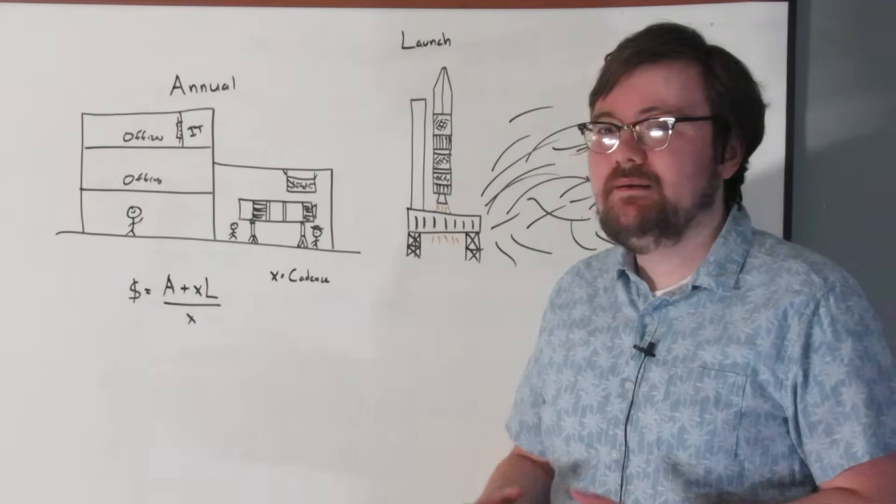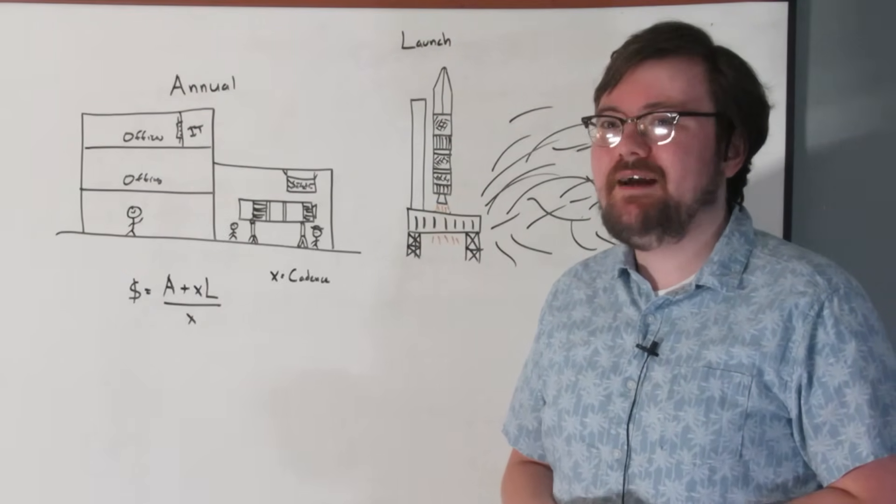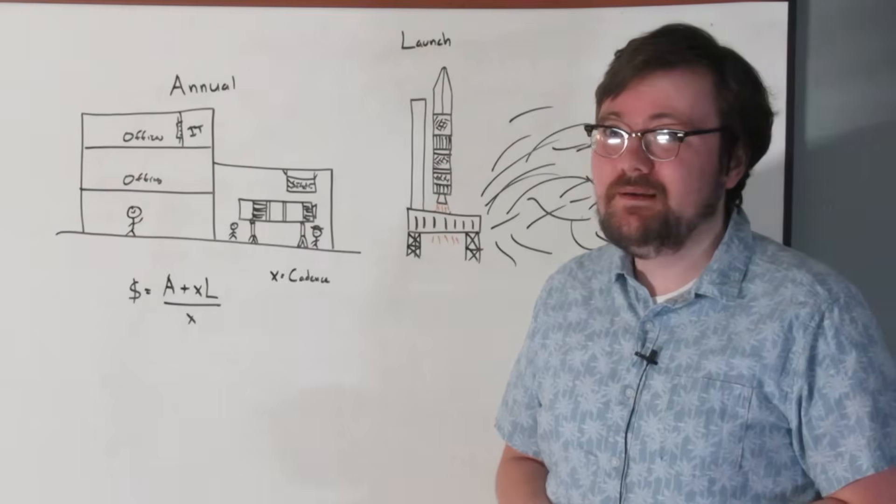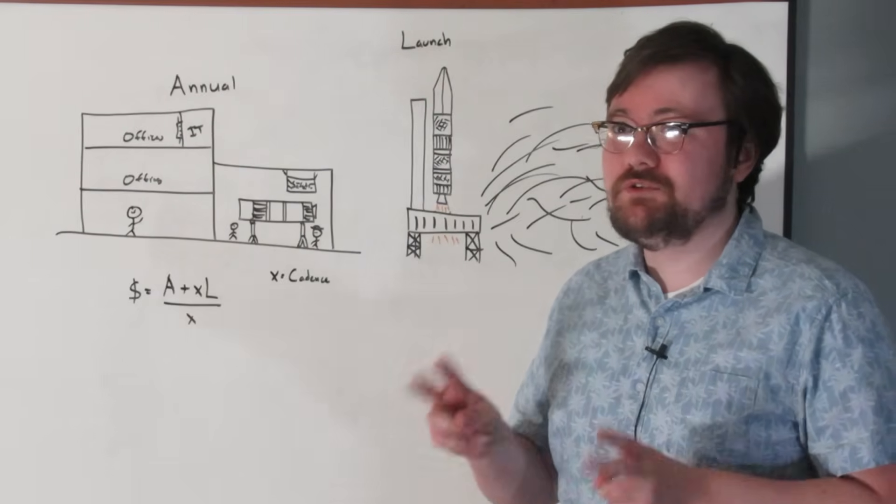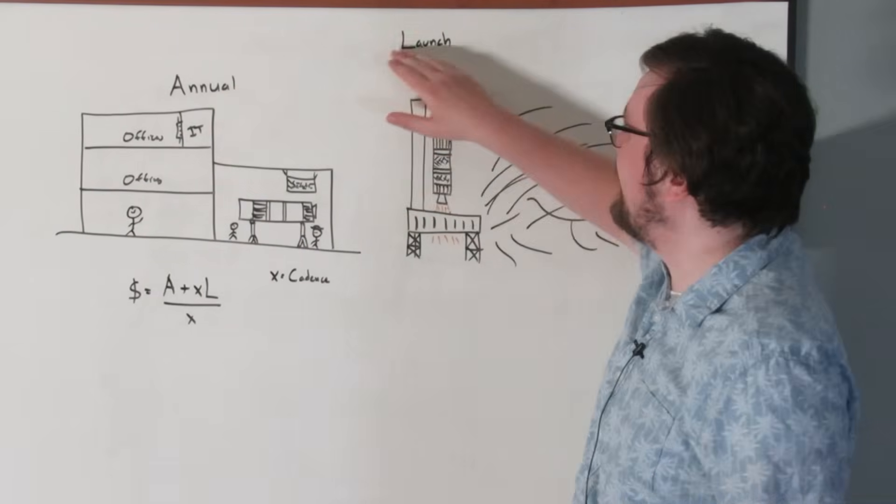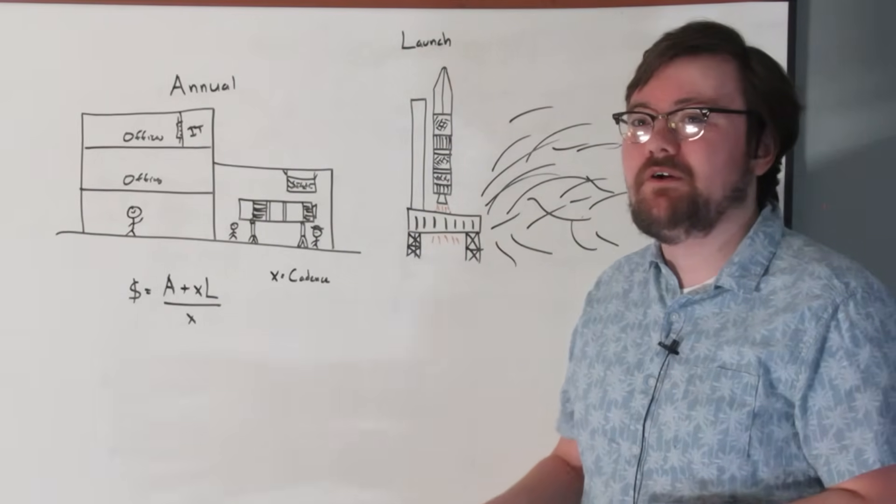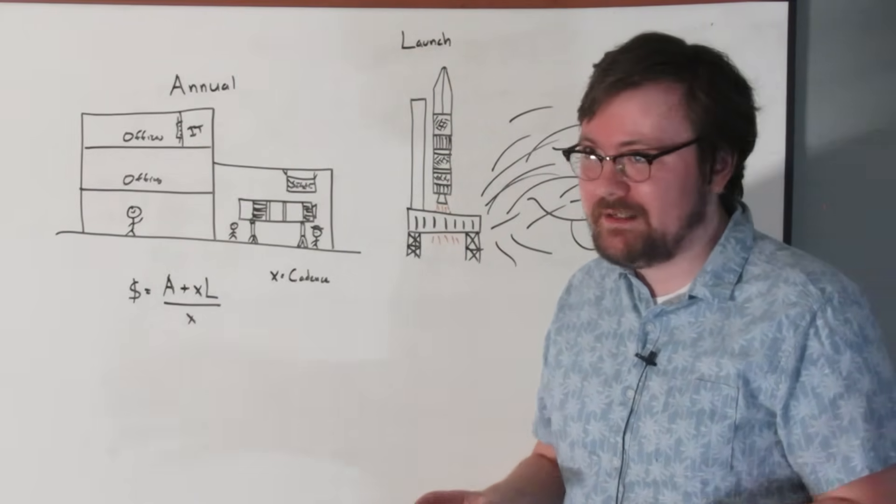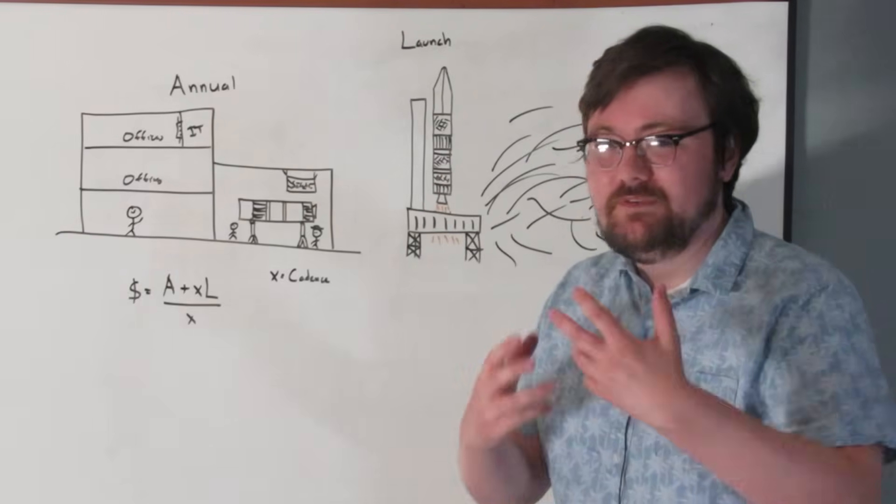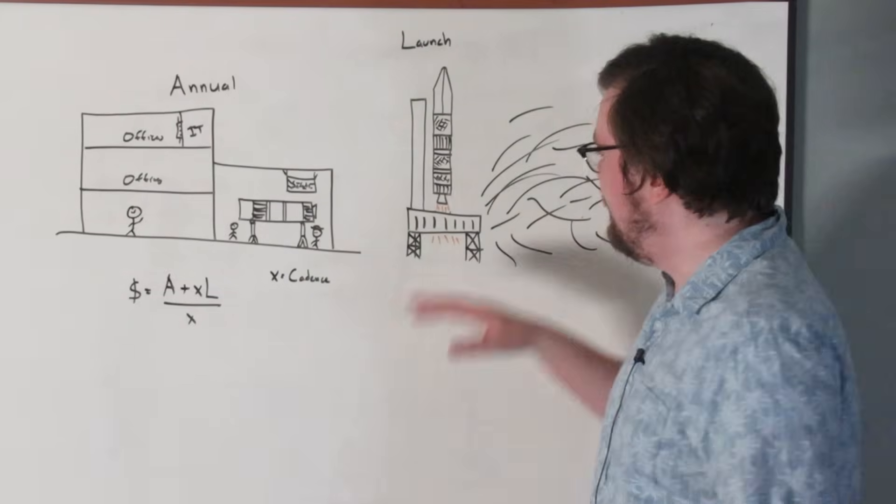But for the launch provider, price is different than cost. Price is the cost plus profit because the rocket company wants to make money. We're assuming a very capitalistic mindset here. Okay, so rocket costs. How much does a rocket actually cost anyway? This is complicated, so I went over to my whiteboard to explain this. Take it away, me.